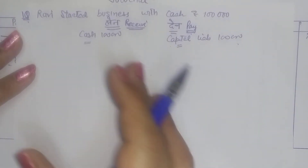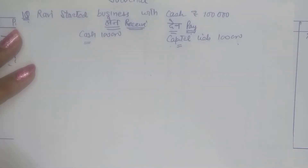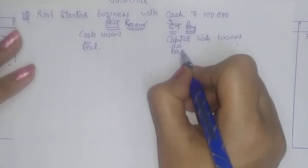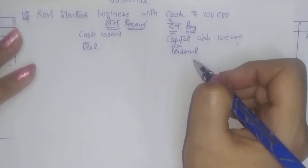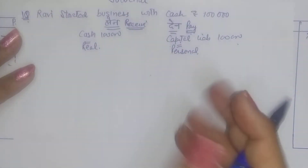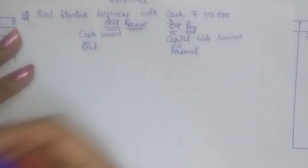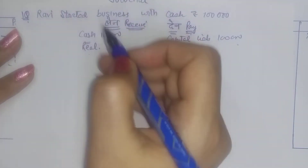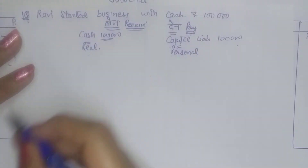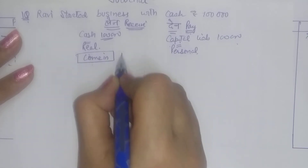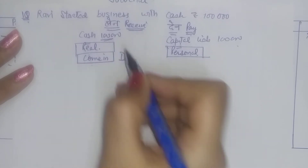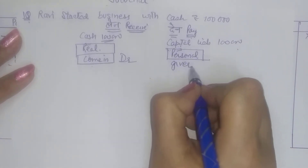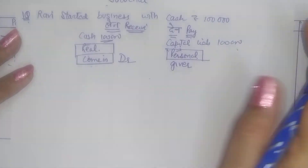For details of the rules of debit and credit, you can check my previous videos. For real account: the rule is debit what comes in, credit what goes out. Cash has come in, so it will be debited. Capital is a personal account — the rule is debit the receiver, credit the giver. The owner is the giver to the firm — he is paying. So credit the giver — capital will be credited.